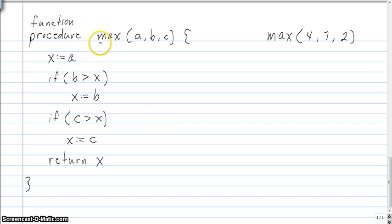And the name of the procedure is max, so usually you name it after whatever it is it does. You know, this is just a function or a procedure. It's just a specific set of lines of code that have a specific purpose. The purpose in this case is to find the maximum of three numbers.